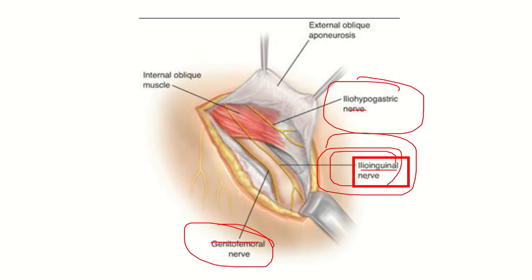The ilioinguinal nerve passes throughout the inguinal canal and is also present at the superficial inguinal ring. The iliohypogastric nerve is located away from the superficial inguinal ring. The genitofemoral nerve is also present but lies in the outer part.